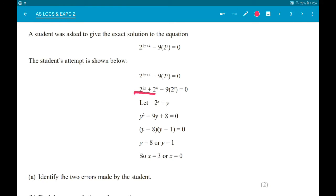So 2 to the 2x add 4 is 2 to the 2x times 2 to the 4. Ok, then in the next line, they've made a substitution that y equals 2 to the x. Good idea. Because then 2 to the 2x is y squared. So that's fine.